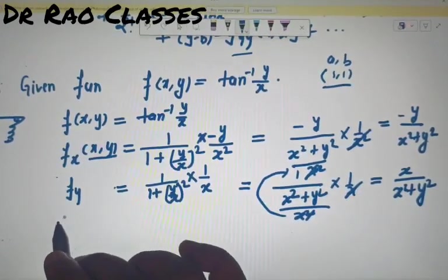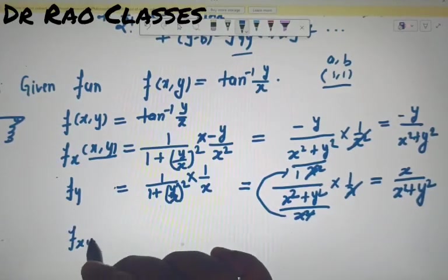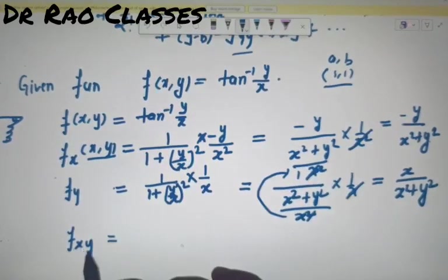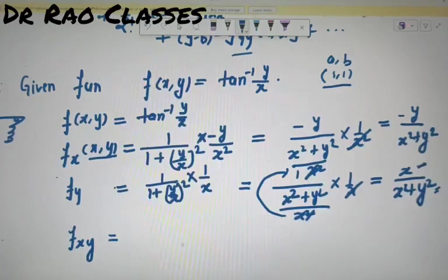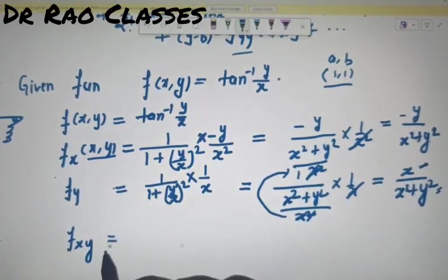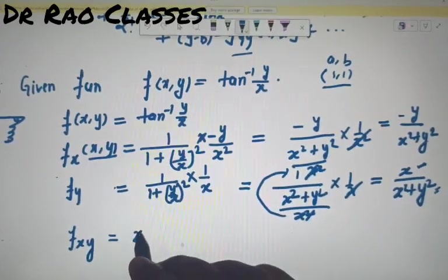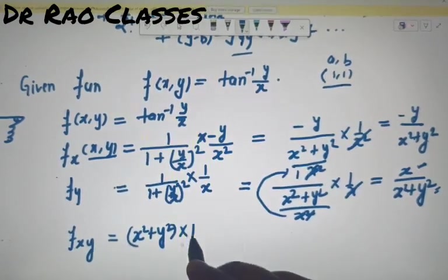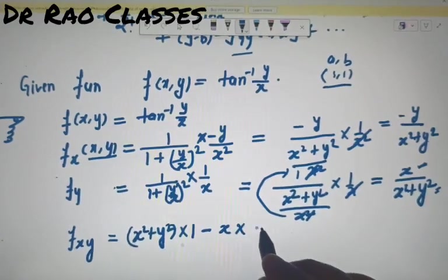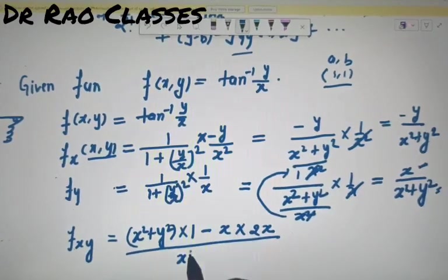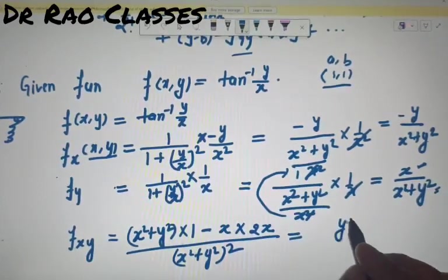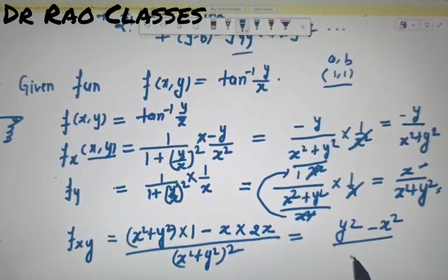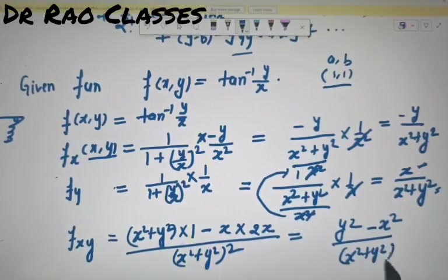f_x और f_y calculate हो गए। अब f_xy निकालना है — यानि f_y को x के respect में differentiate करना है। Quotient rule लगाएंगे: denominator × (numerator का derivative w.r.t. x) minus numerator × (denominator का derivative w.r.t. x = 2x), divided by denominator squared। Simplify करने पर f_xy = (y² - x²)/(x² + y²)²।